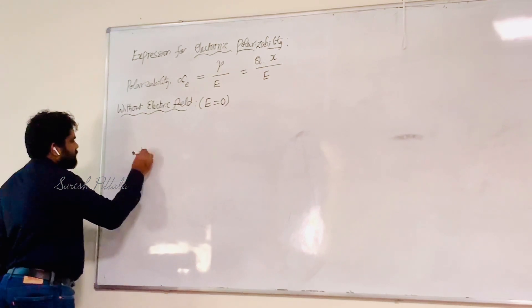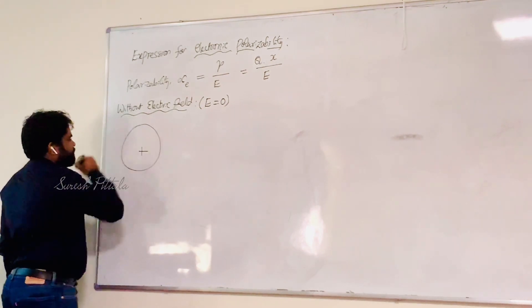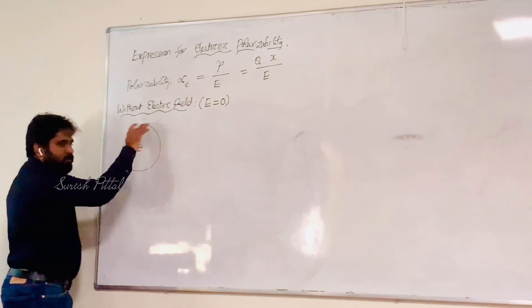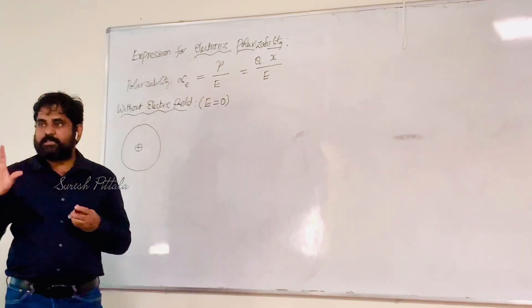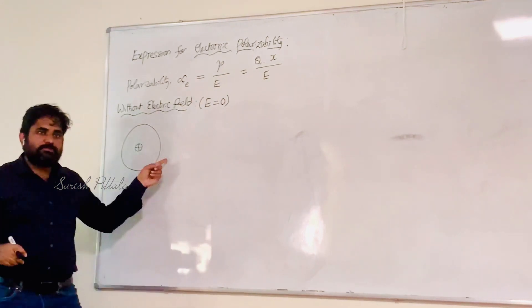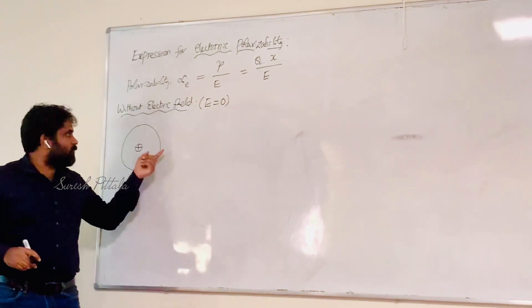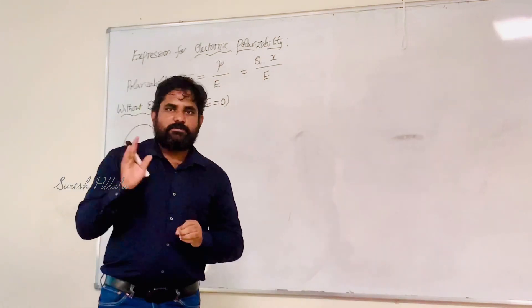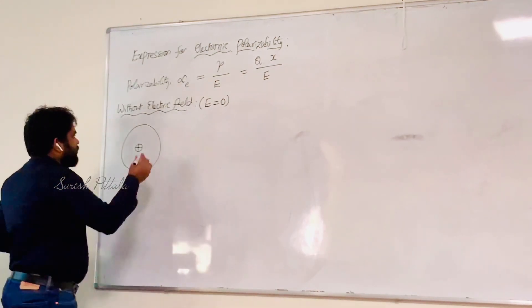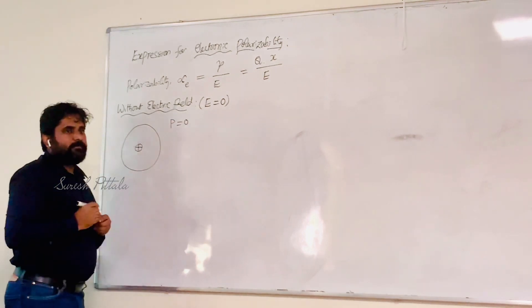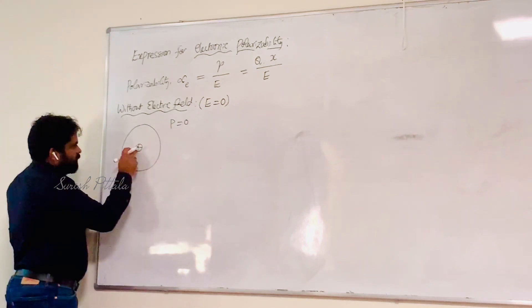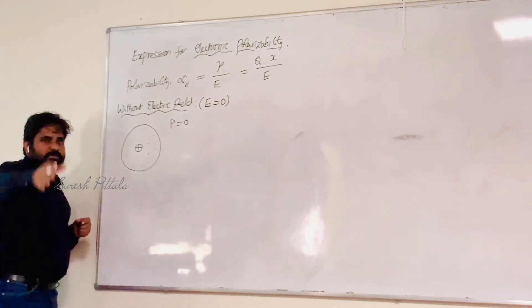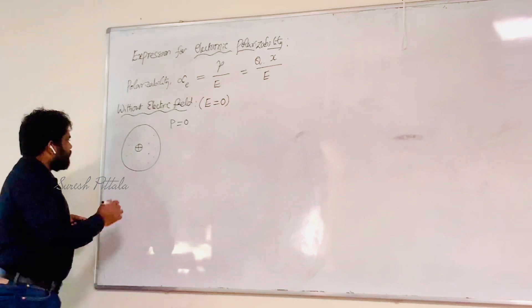Consider an atom in a dielectric material. The atom has a positive nucleus at the center and the electron cloud surrounds it. In the absence of an electric field, the center of gravity of the positive charge and the center of gravity of the negative electron cloud coincide at the same point. Therefore they cancel each other out and the polarization is zero.